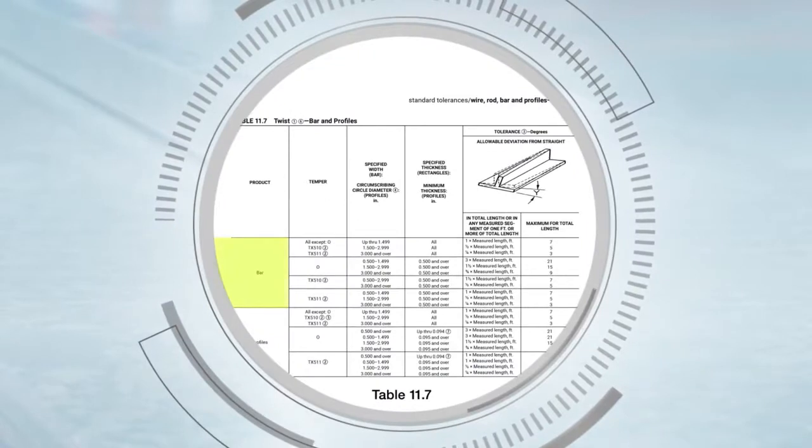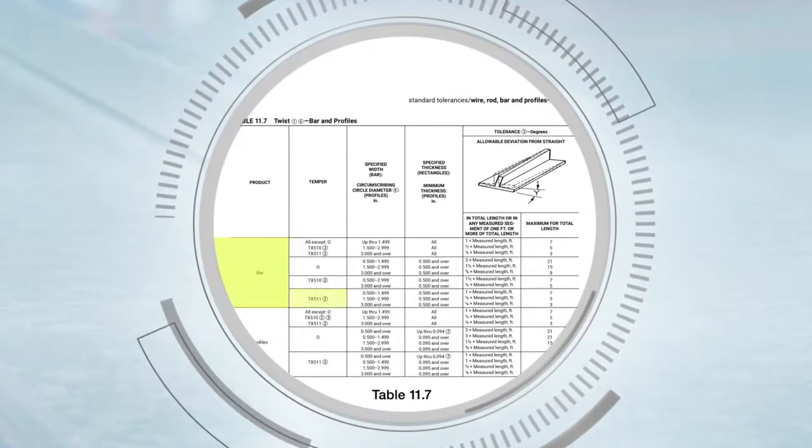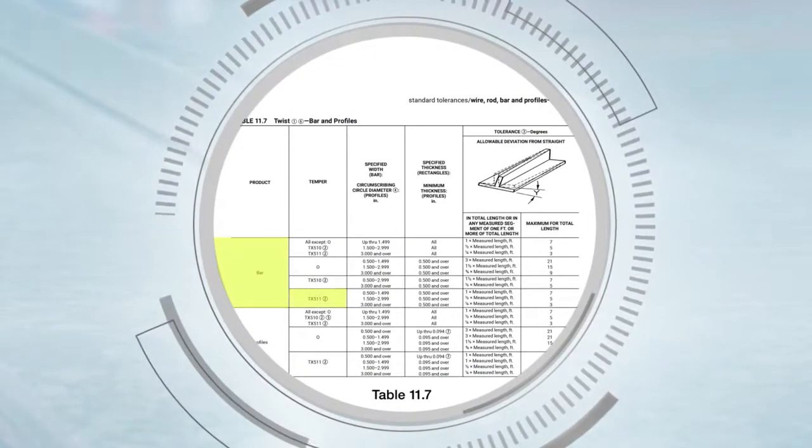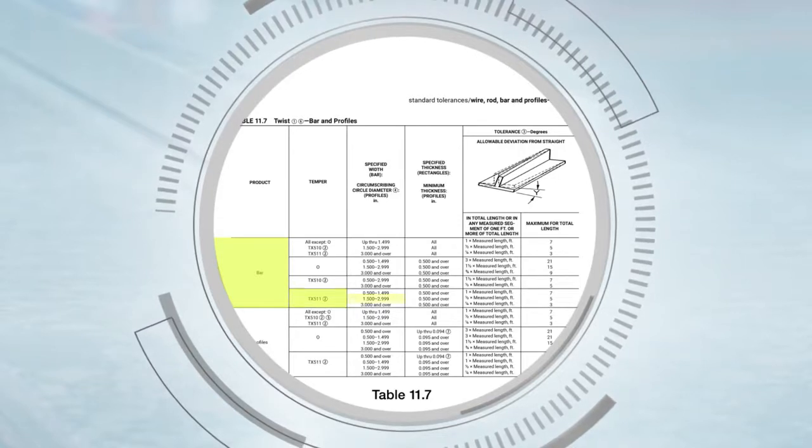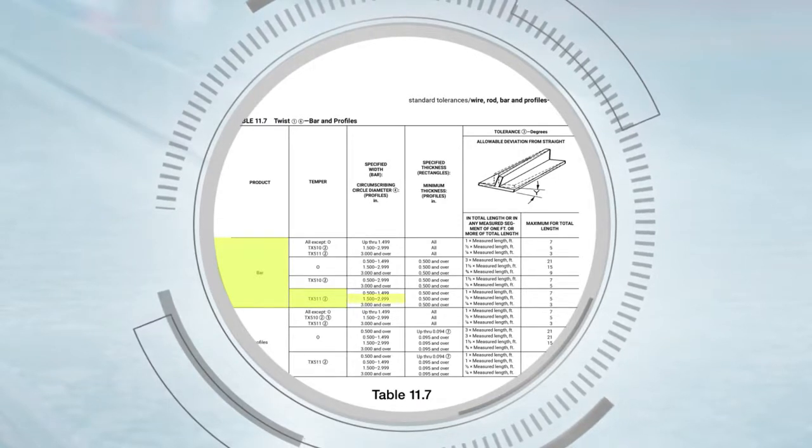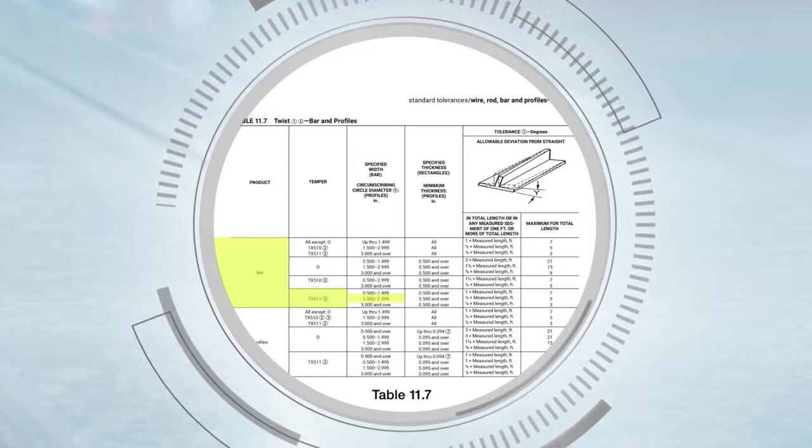Reading across the table, we know this is a bar and T6511 temper will be in the TX511 row. The specified width is one and a half inches, which will put us in the middle row of the cell in the next column over.